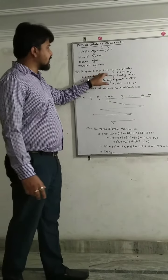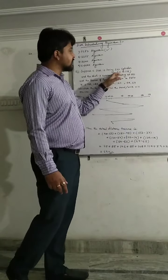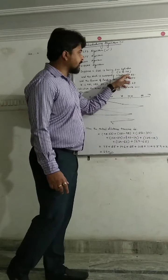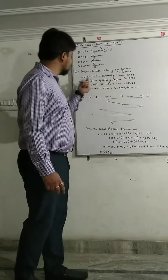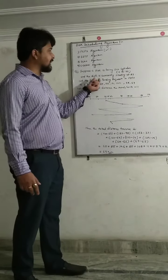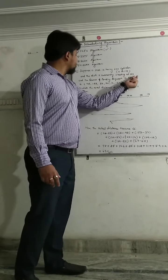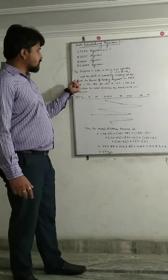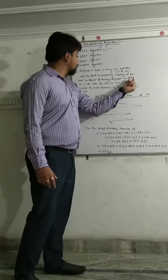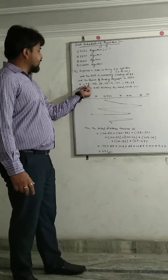Suppose a disk is having 200 cylinders starting from 0 to 199, that is 200 cylinders, and the disk is currently starting at 53. The queue of pending requests in FIFO is 98,